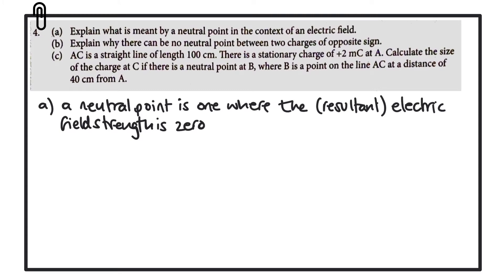That leads into part B: explain why there can be no neutral point between two charges of opposite sign. We'll use a diagram to help explain this. Let's say we have two positive charges — I'll call the first charge A and the second charge B. Somewhere between those two points exists a neutral point where the resultant electric field strength is zero.